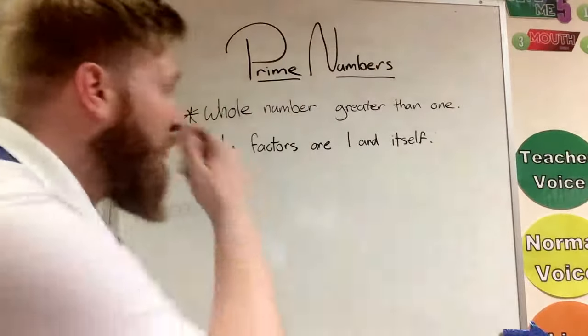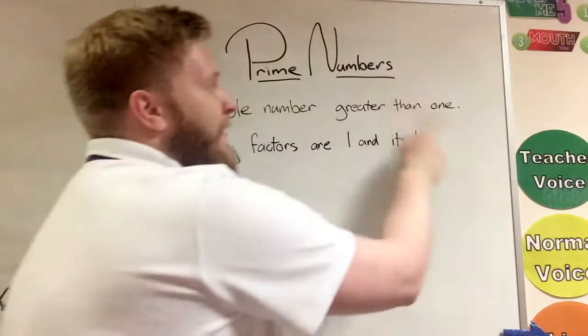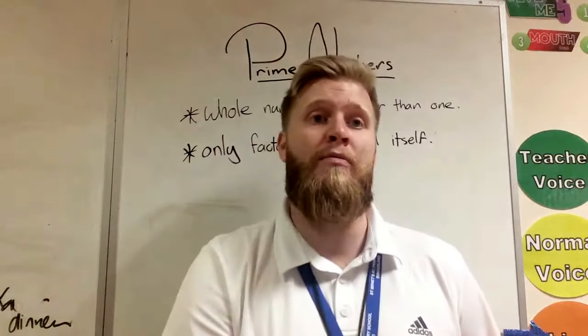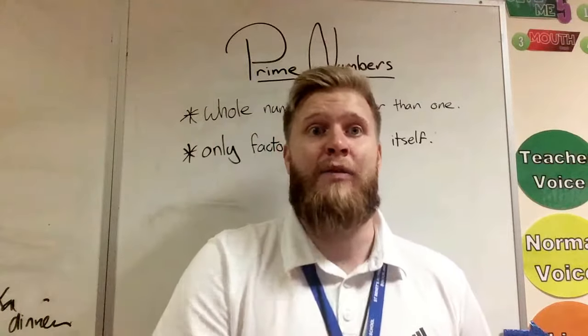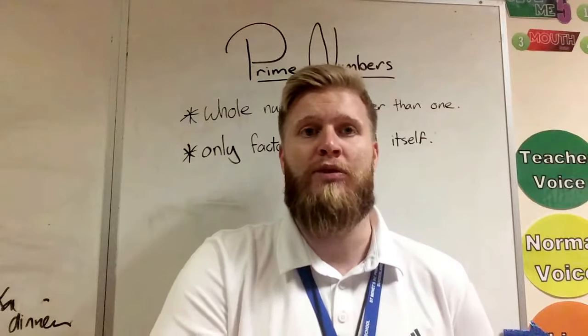So the first rule for a prime number is there has to be a whole number that's greater than 1. So it means negative numbers aren't prime numbers and it can't be a decimal or a number with a fraction.